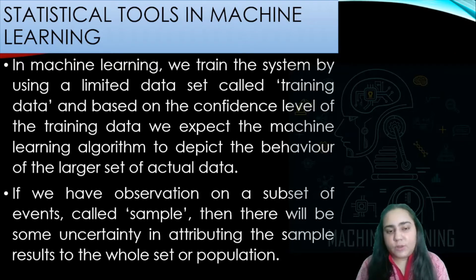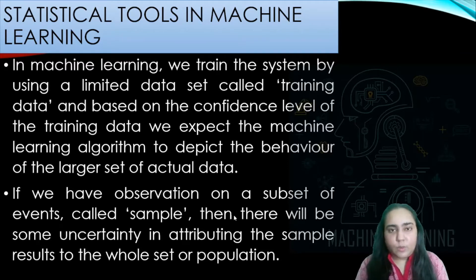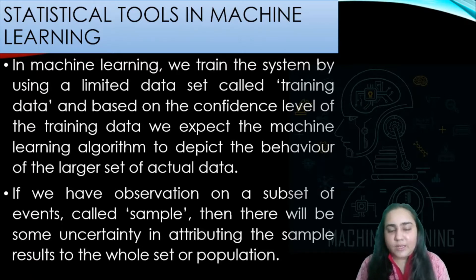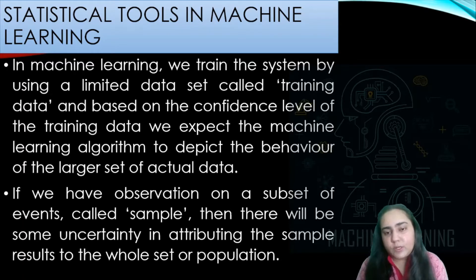If we have observations on a subset of events called a sample, then there will be some uncertainty in attributing the sample results to the whole population. It is recommended that while analyzing anything in machine learning, you take a sample of the population because it's not possible to analyze the entire population. We hope that whatever is the result of that sample is going to be applied to the whole population as well, and this of course gives rise to certain inaccuracy in your findings.